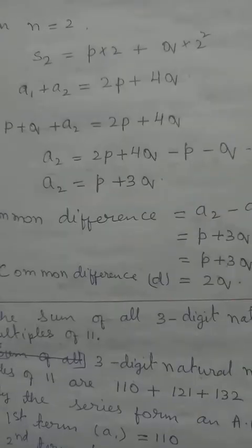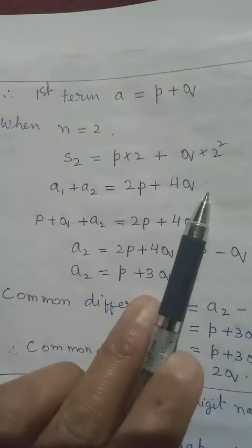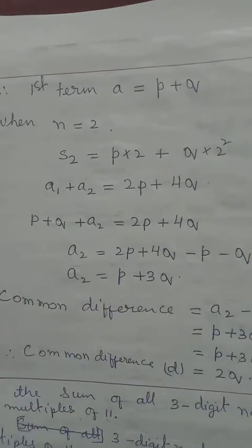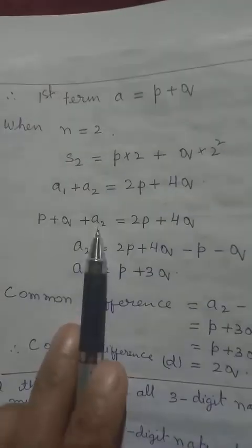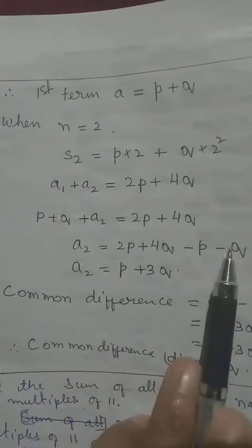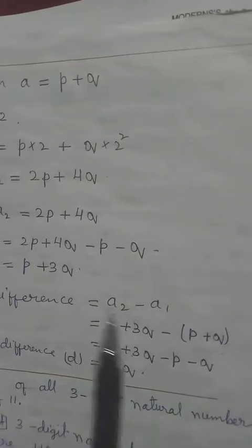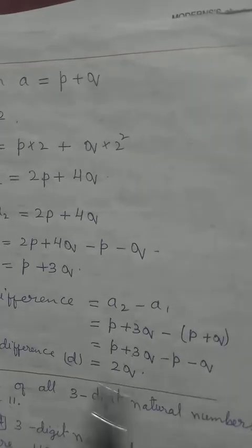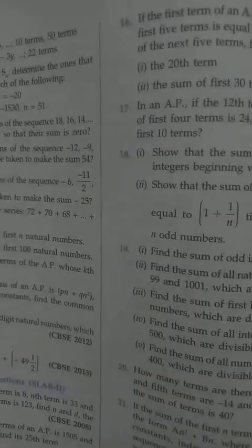For the second term, set N = 2: S_2 = P(2) + Q(2²) = 2P + 4Q. Since S_2 = A_1 + A_2, we get A_2 = S_2 − A_1 = (2P + 4Q) − (P + Q) = P + 3Q. Common difference D = A_2 − A_1 = (P + 3Q) − (P + Q) = 2Q.